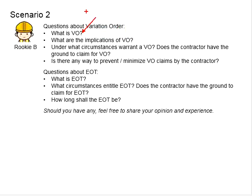Regarding variation orders, what is a VO? What are the implications of a VO? Under what circumstances is a VO warranted? Do contractors have grounds to claim for VO? Who is the person to decide whether VO should be awarded? And is there any way to prevent or minimize VO claims by contractors?